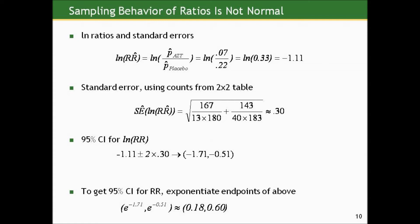So the log of the relative risk, remember the relative risk we had 7% of the infants being infected within 18 months of birth in the AZT group compared to about 22% in the placebo group, which gave us a relative risk estimate of roughly 0.33. And the log of 0.33 is negative 1.11. Now we actually get the standard error for this using the counts from the 2x2 table. Go through the math and it turns out to be about 0.30.